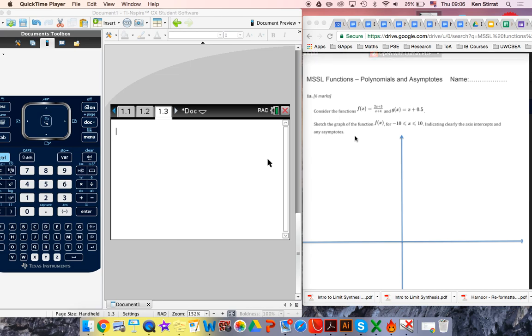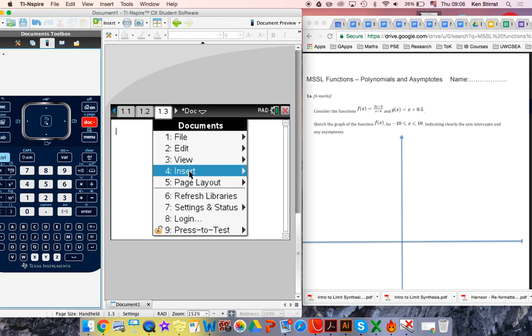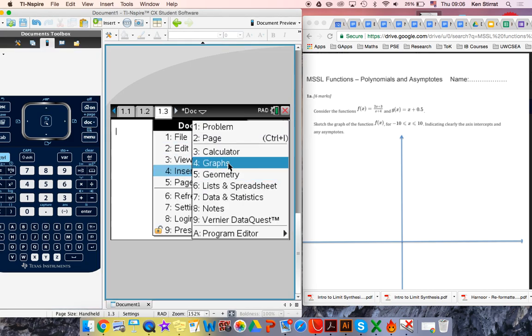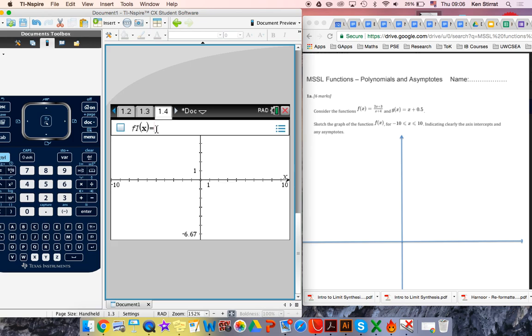Consider the function f of x here. Got to insert a graph page. Document, Insert, Graphs. Type in 2x plus 3 divided by x plus 4. You'll see that there's a terrible mistake here because we haven't put this as a fraction. It will take just the 3 and divide it by x. It won't do this full fraction over here.